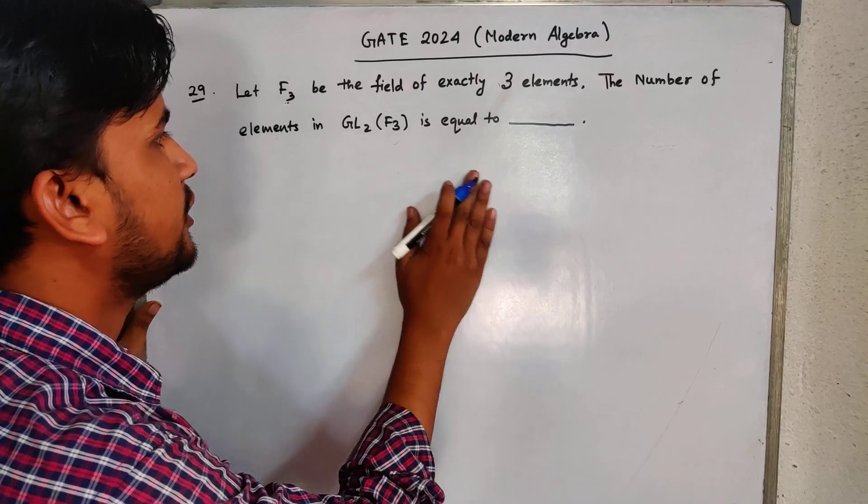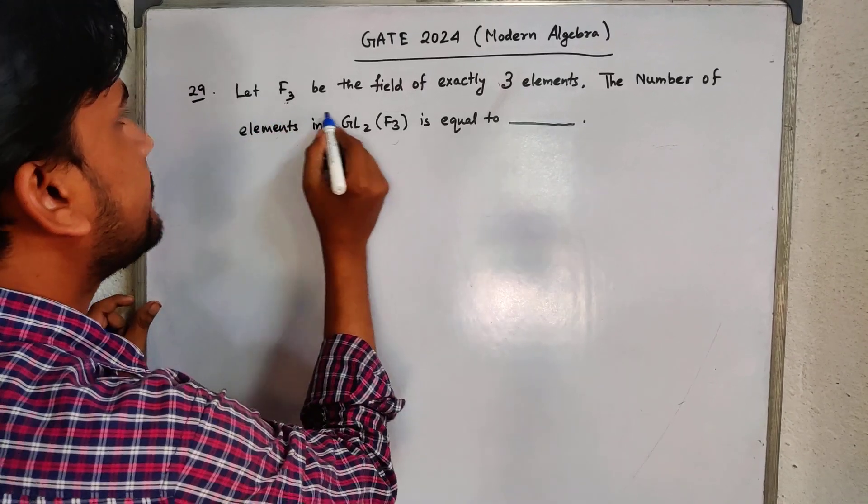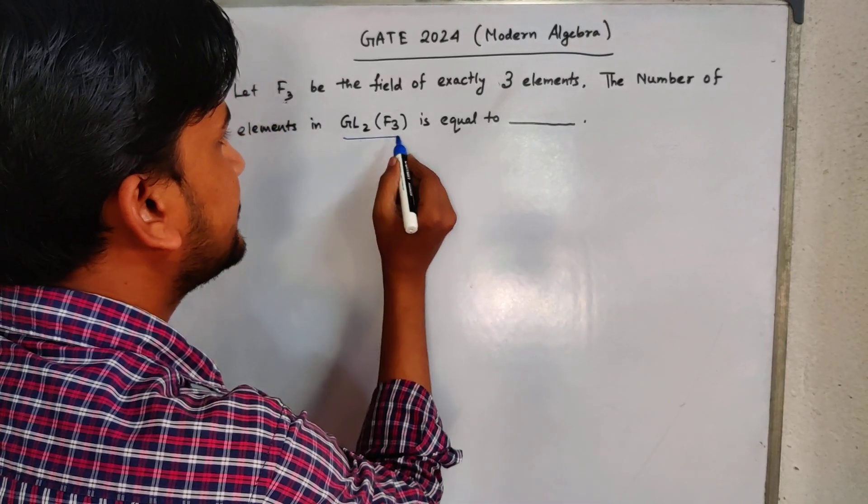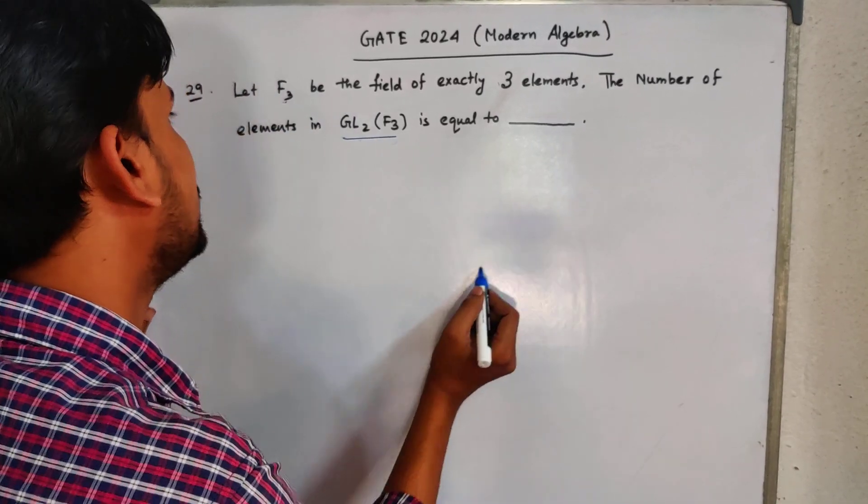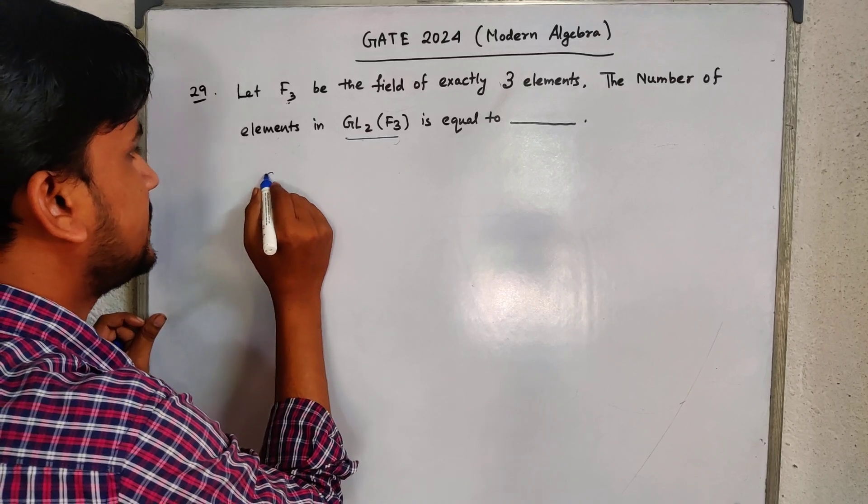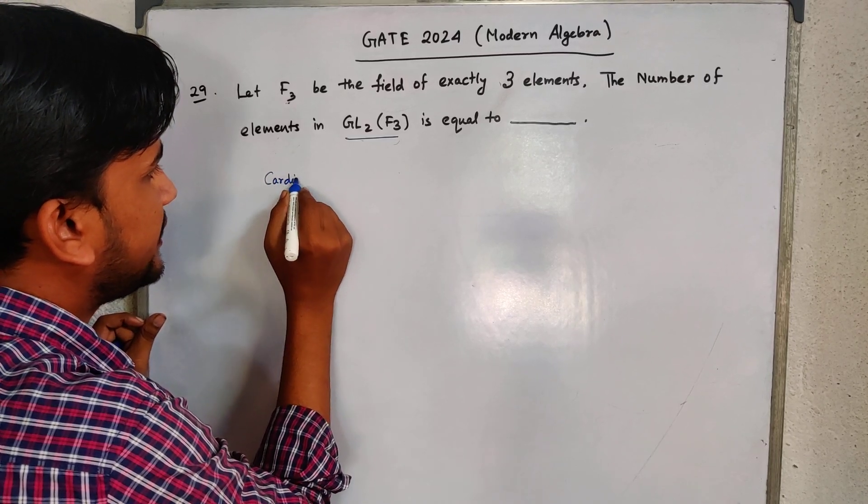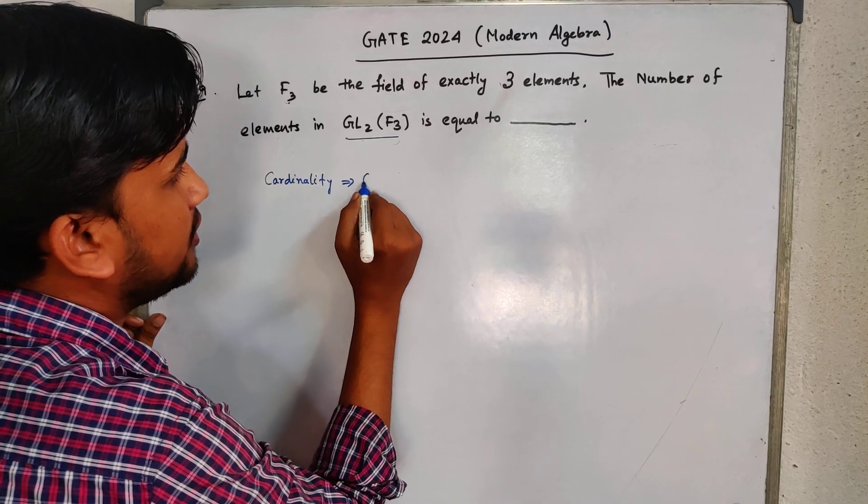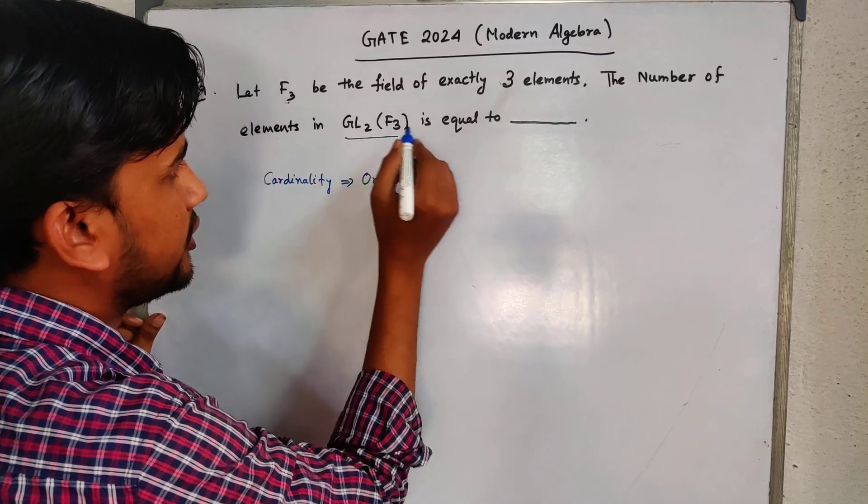Let F3 be the field with exactly three elements. The number of elements in GL(2, F3) is equal to the number of elements, means the cardinality of the set. Cardinality means this is equal to order. You have to find the order of GL(2, F3).